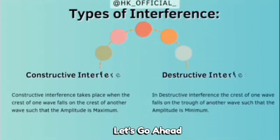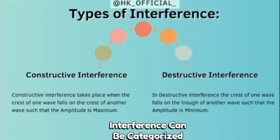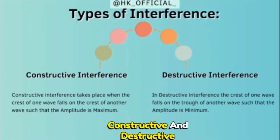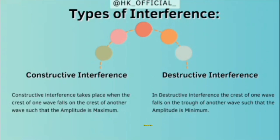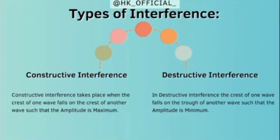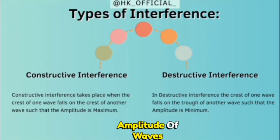Let's see the types of interference. Interference can be categorized into two main types: constructive and destructive interference. Constructive interference happens when the crest of one wave aligns with the crest of another wave, resulting in a maximum combined amplitude of the waves.